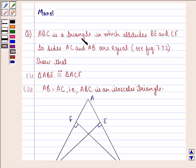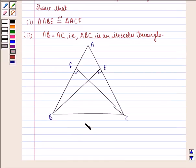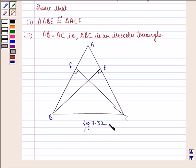The question says ABC is a triangle in which altitudes BE and CF to sides AC and AB are equal. See figure 7.32. Show that first, triangle ABE is congruent to triangle ACF, and second, AB is equal to AC, that is, ABC is an isosceles triangle.